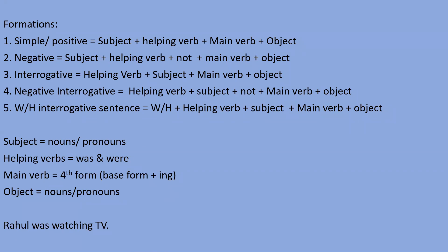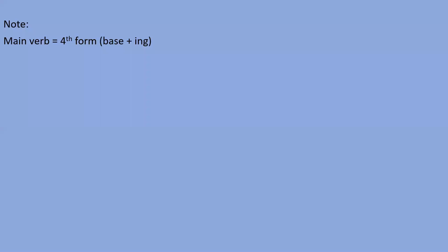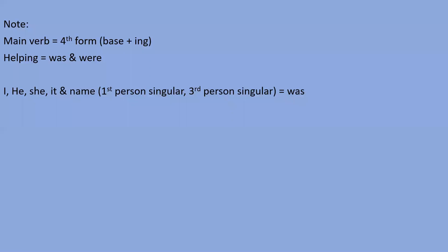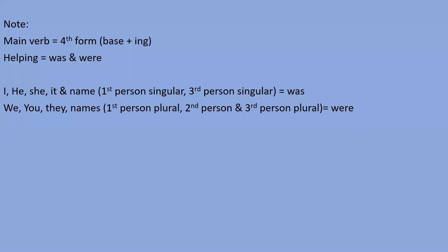The main verb is in the fourth form — base form plus '-ing' (the ing form). The helping verbs are 'was' and 'were.' With first person singular (I) and third person singular (he, she, it, or a name), use 'was.' With all other subjects — we, you, they, plural names — use 'were.' Example: 'Rahul was watching TV.' Rahul is the subject, 'was' is the helping verb, 'watching' is the main verb in fourth form, and 'TV' is the object.